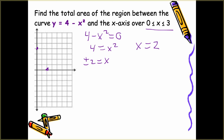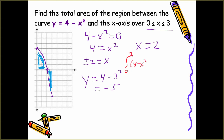If we go all the way to 3, we plug it into the original: y equals 4 minus 3 squared, which is negative 5. So at x equals 3, the curve goes down to negative 5. What can be tricky is we want the area between our curve and the x-axis in both regions. So we integrate: the integral from 0 to 2 of (4 minus x squared) dx, plus the integral from 2 to 3 of (4 minus x squared) dx.